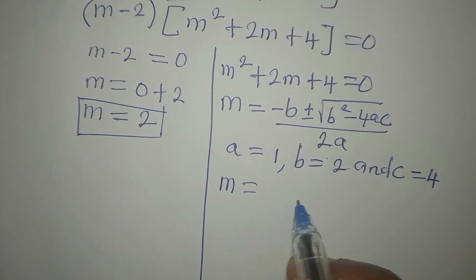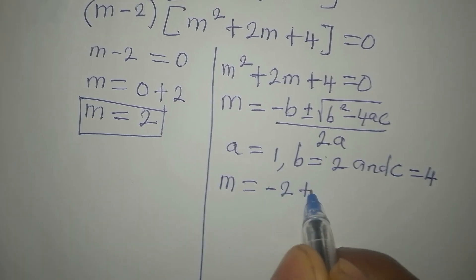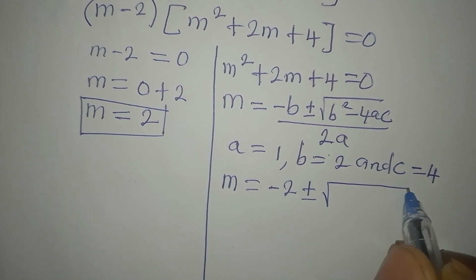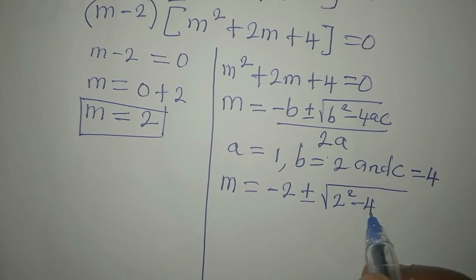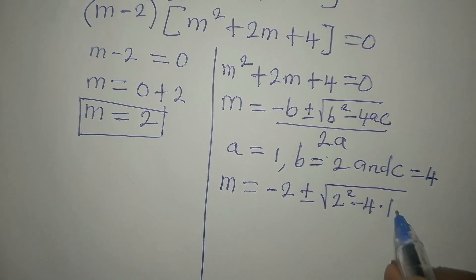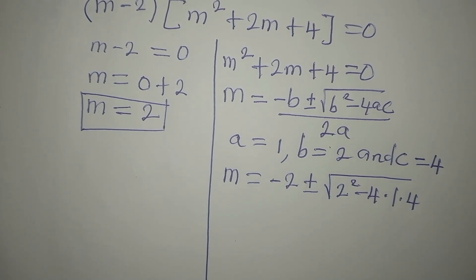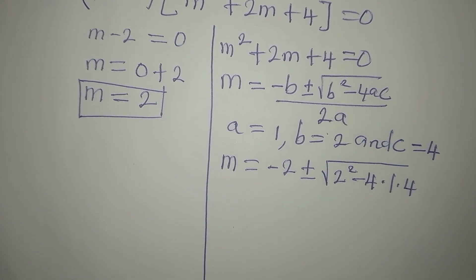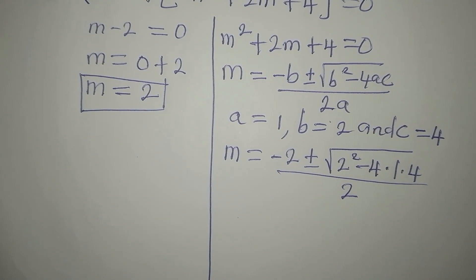So our m will now be minus b, which will be minus 2 now, plus or minus. b squared will now be 2 squared minus 4 times a times c. Our c is 4. So if we go ahead with this, this is divided by 2 times 1. That will still be 2.